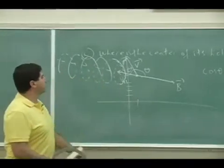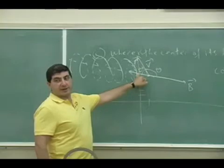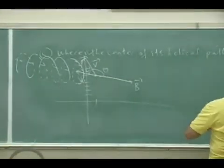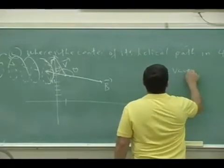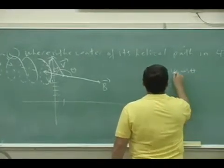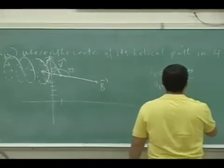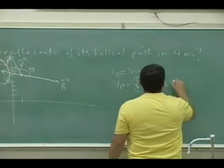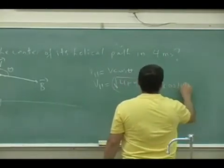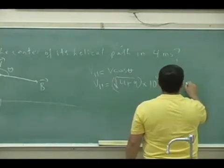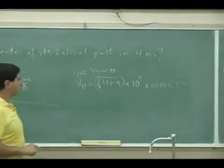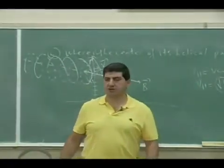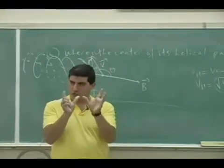Now, where is the center of its helical path going to be? We need to calculate the parallel component of velocity, since the parallel component is not affected by the magnetic field. V parallel equals V cosine theta. So V equals square root of 4 plus 9, times 10 to the fourth, times cosine of 145.5 degrees. But since I just want the magnitude, I can take cosine of 34.5 degrees instead.